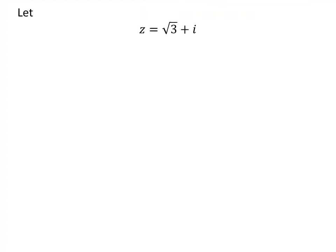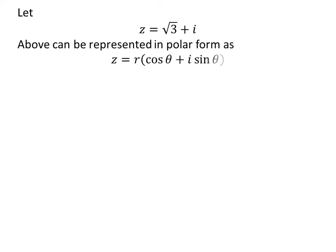Let z = √3 + i. The complex number z can be represented in polar form as z = r(cos θ + i sin θ).